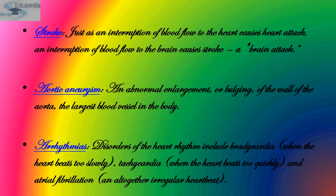Other disorders include stroke, aortic aneurysm, and arrhythmias. Just as an interruption of blood flow to the heart causes a heart attack, an interruption of blood flow to the brain causes a stroke — called a brain attack. An aortic aneurysm is an abnormal enlargement or bulging of the wall of the aorta, the largest blood vessel in the body. Arrhythmias are disorders of heart rhythm, including bradycardia — when the heartbeat is too slow — tachycardia — when the heart beats too quickly — and atrial fibrillation, an altogether irregular heartbeat.